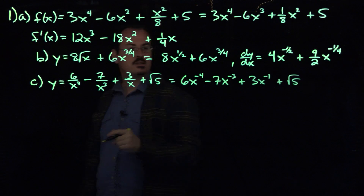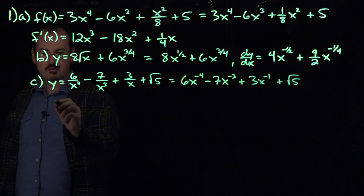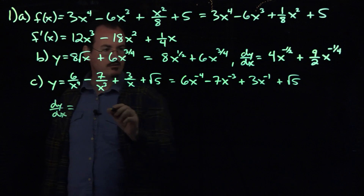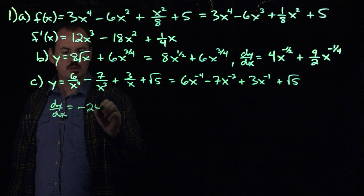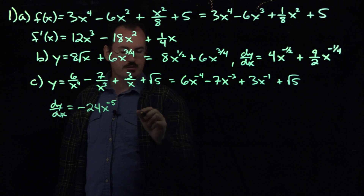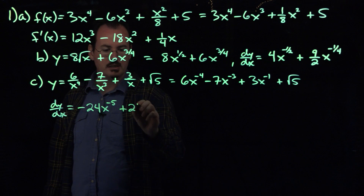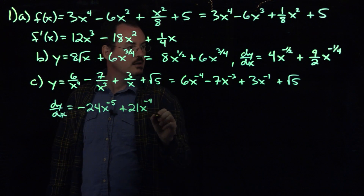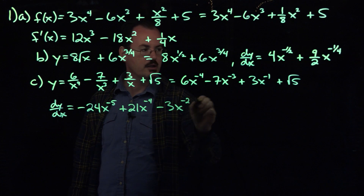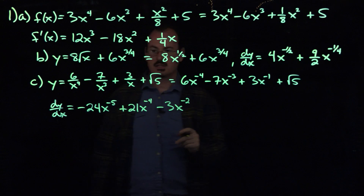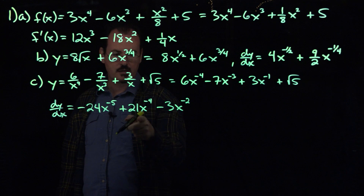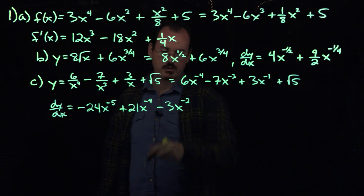The root 5 really doesn't matter because it's a constant anyway. Then the derivative dy/dx by the power rule: take the negative 4, put it in front, we get minus 24x to the minus 5. Multiply the minus 3 by the minus 7, we get plus 21x to the minus 4. Then minus 3x to the minus 2, and the derivative of the constant is of course 0. If you wanted to write this with positive exponents, you could put x to the fifth, x to the fourth, and x squared in the denominators.